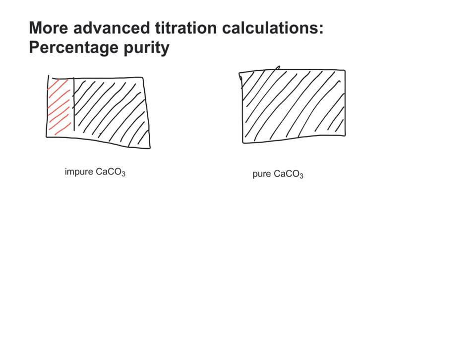So if I was titrating a sample of calcium carbonate that I knew was impure, only the pure part of that impure sample is actually going to react with my acid. So I can use that concept to calculate what percentage of my impure calcium carbonate is actually made of calcium carbonate.